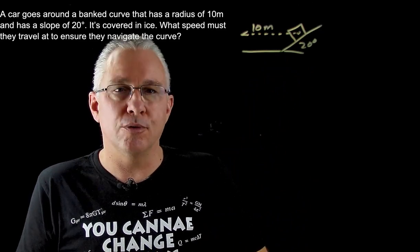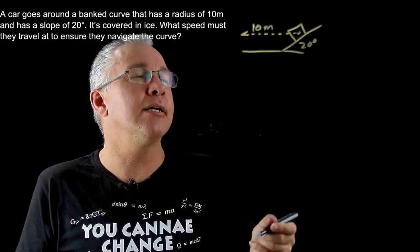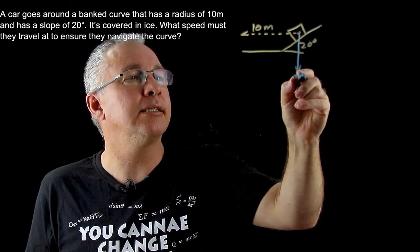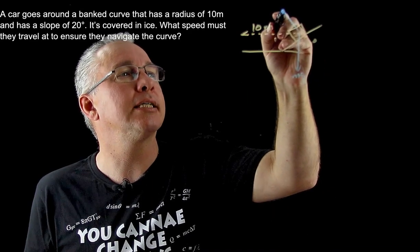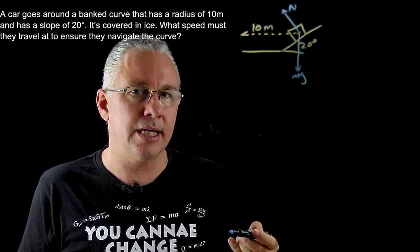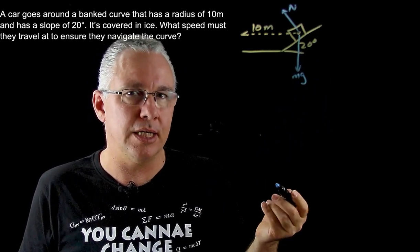Then what we do of course is label the forces. The forces are such that we have our gravitational force acting down. We also have our normal force acting in that direction and those two are the only forces acting. In this case we have ice so we don't have any frictional values here.